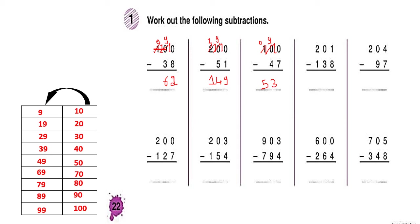If we have 100 minus 38, we have to subtract 8 from 0. We cannot do that. So we borrow from the 0 — we also cannot borrow from the 0 — so we borrow the 1 from the hundreds place. It becomes 0, and we put the 1 beside the tens place, making it 10. Then we borrow 1 again; the 10 becomes 9 and the units 0 becomes 10. We subtract 8 from 10 to get 2, then 9 minus 3 is 6, and 0 minus 0 is 0.